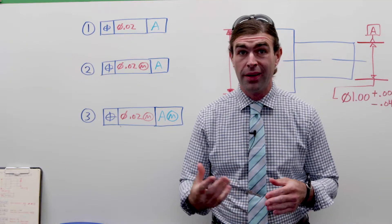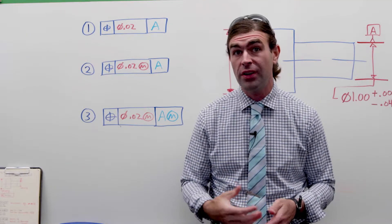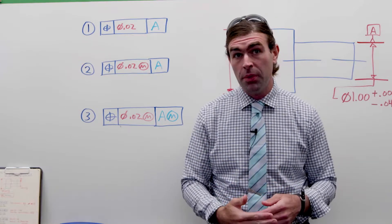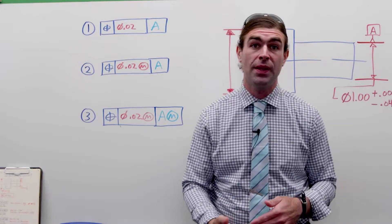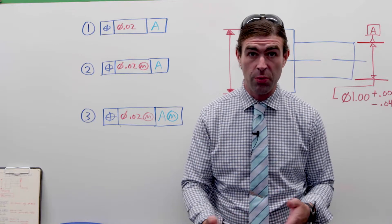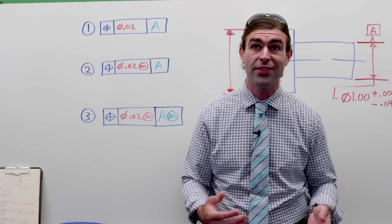In this video, I want to chat about a common GD&T certification exam question. This is going to be the maximum allowable displacement between the axis of a datum and a feature when the datum and the feature are both coaxial cylinders.